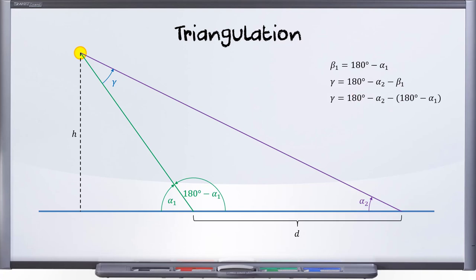And hey, look at this, the 180s can drop. And gamma is simply alpha one minus alpha two. Let's put that straight into the diagram. All right, we now have all three of the angles of our triangle.